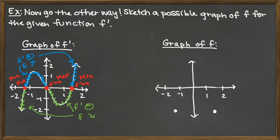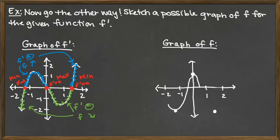At x = 0 we have a max value, so I'll put that up high – though it didn't have to be exactly that high; we're making a choice since I'm not labeling the y-axis. The remaining piece of information is the intervals where f prime was positive and negative, which gives us the intervals where f is increasing and decreasing. I can then connect my maxes and mins smoothly to get a nice graph that works for f.